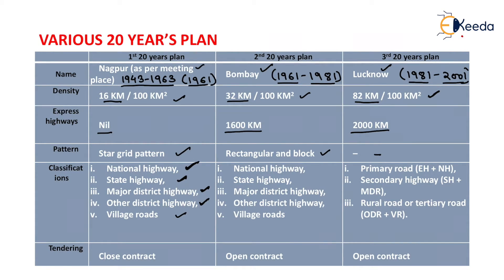Village roads link the villages to the road system and are designed, constructed, and maintained under the authority of the provincial or state highway departments. So the Nagpur road plan is classified as national highway, state highway, major district road, other district road, and village roads. The same classification is used in the Bombay road plan as well.